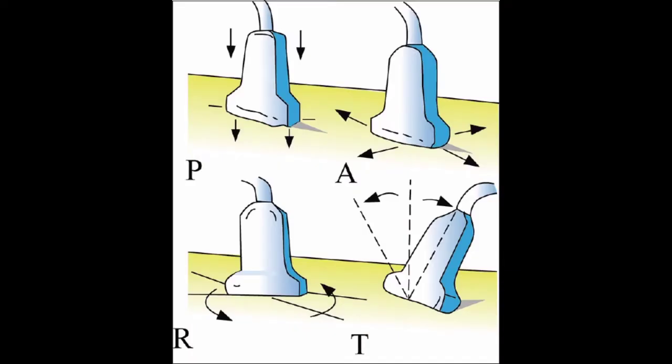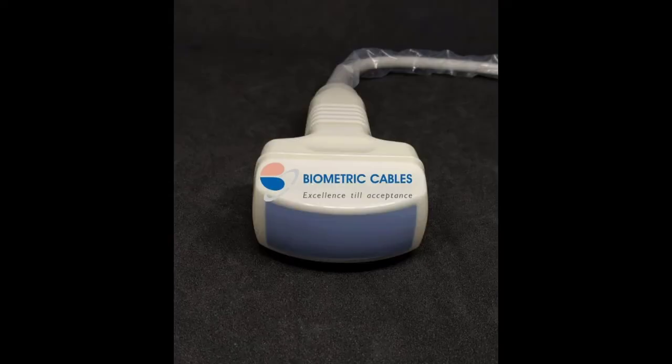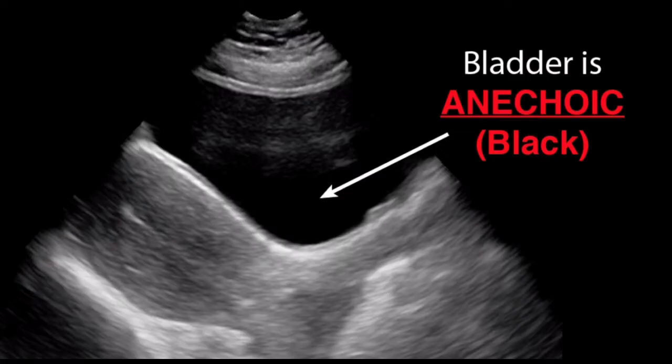The transducer should be selected to operate at the highest clinically appropriate frequency that will allow adequate visualization of deep pelvic structures. For transabdominal evaluation, a 3.5 MHz or higher transducer is employed. Curved linear array as well as sector transducers with a smaller footprint are often employed.